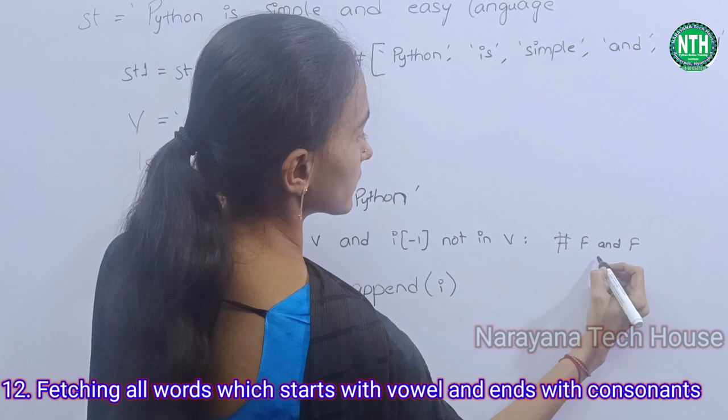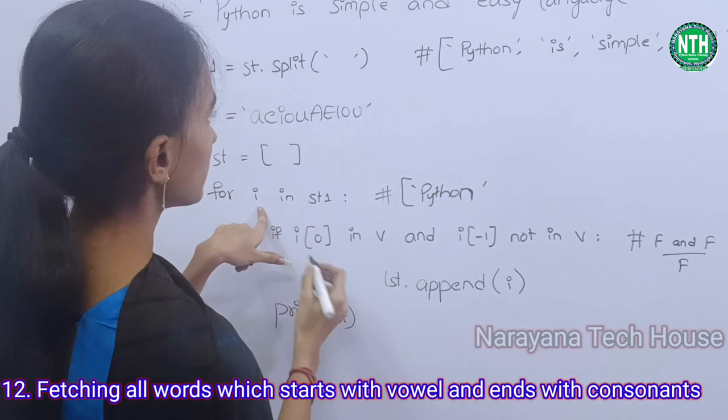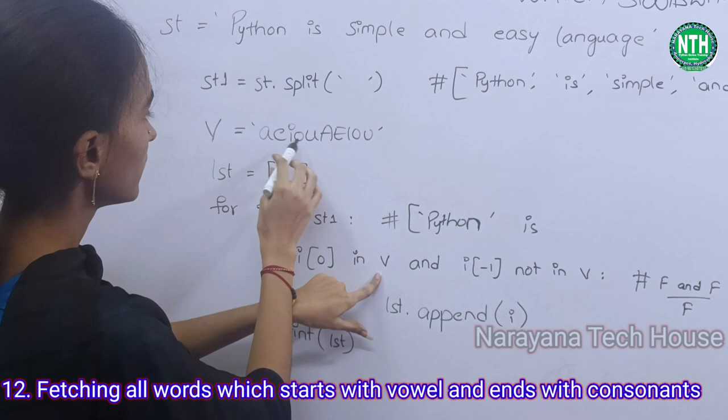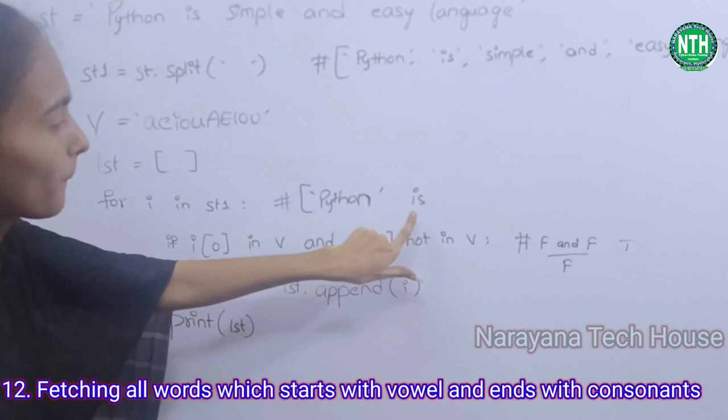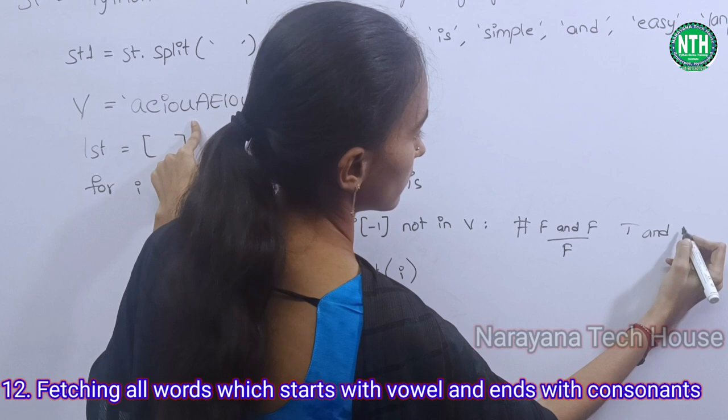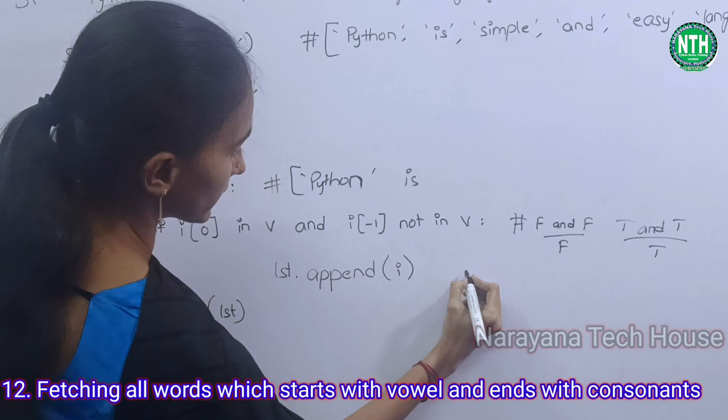Total condition is false, so it is not appending. Next, i value is 'is'. i[0] = 'i' — is 'i' in V? True. And i[-1] means last character 's' — 's' is not in V, so that is also true. True and true becomes true, so it will append 'is' to the list.